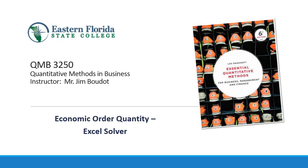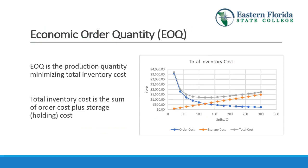This video introduces Excel Solver, and we are going to use Solver to calculate an economic order quantity. This is Chapter 16 in your textbook. EOQ is the number of units which minimizes total inventory cost. Total inventory cost is the sum of order cost plus storage cost.